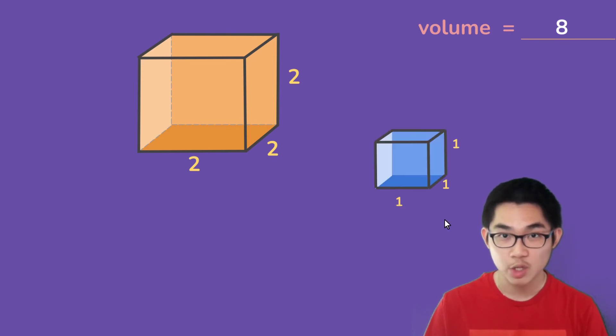Now where does the volume formula come from? Well, let's imagine if we have a unit cube, and a unit cube is basically a cube where each side is one. How many unit cubes can we fill this big cube?